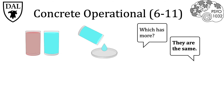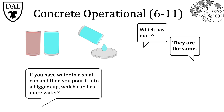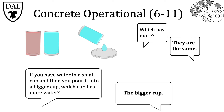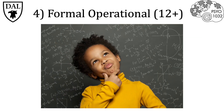For example, they have a hard time with worded questions where they have to imagine objects. If a child is asked, 'If you have water in a small cup, then you pour it into a bigger cup, which cup has more water?' — they would answer the bigger cup. In the fourth, formal operational stage, formal logic develops. For example, a child could reason that if Maria is a woman and all women are mortal, then Maria is mortal. In addition, children develop scientific reasoning and hypothesis testing skills during this stage.